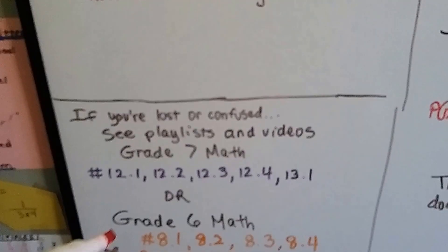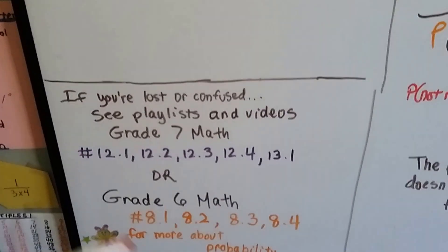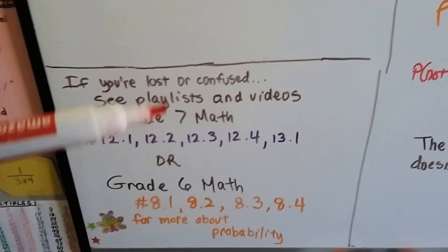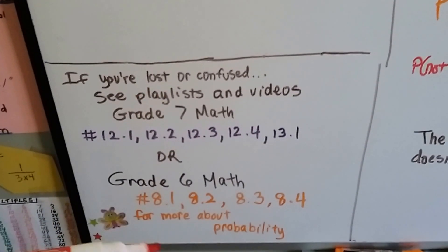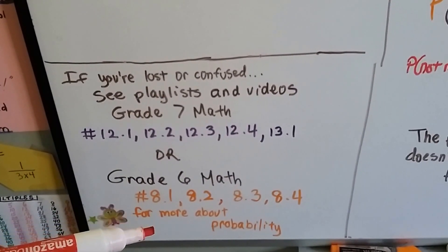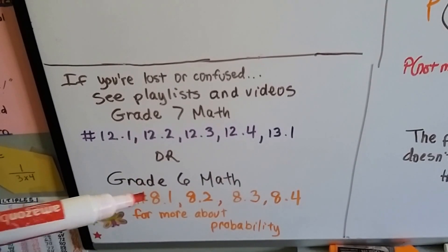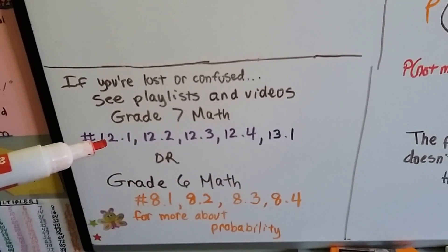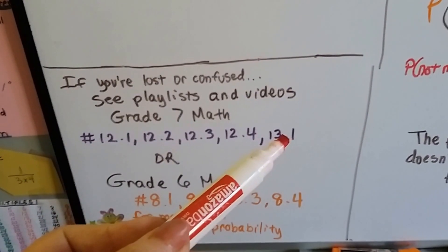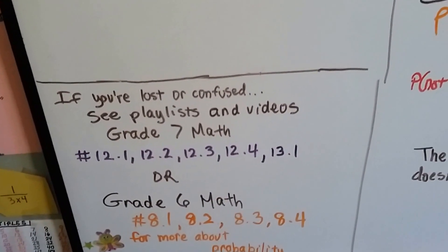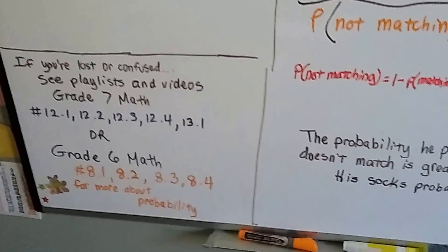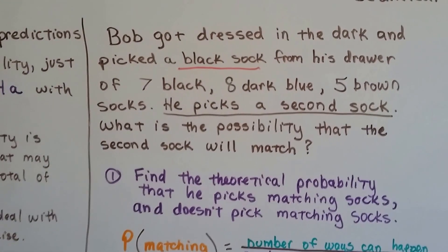If you're really confused about all this terminology, you need to go back to either the 6th grade playlist or the 7th grade playlist and start watching the probability videos from there. It started in Chapter 8 with Grade 6 and Chapter 12, and went into Chapter 13 with Grade 7. We're near the end of the book — only one or two more videos until we're completely done talking about probability.